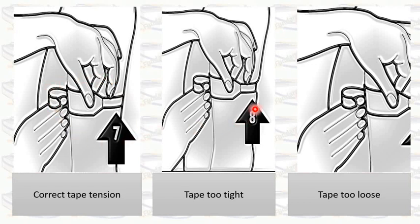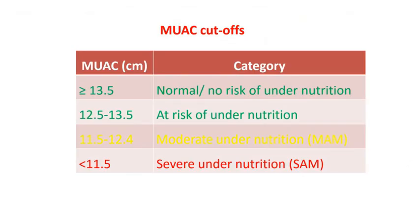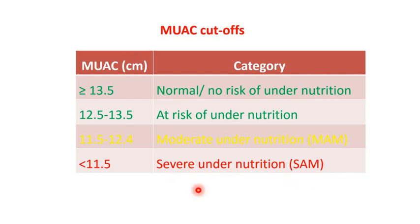Correct the tape tension — it should not be too tight and not too loose. This is the correct tape tension. The cut-off points for MUAC: equal to or more than 13.5 cm indicates normal status with no risk of under-nutrition; 12.5 to 13.5 indicates at risk of under-nutrition; 11.5 to 12.4 indicates moderate under-nutrition, also called MAM; and less than 11.5 indicates severe under-nutrition, also called SAM. These cut-off points are agreed upon by WHO and UNICEF.